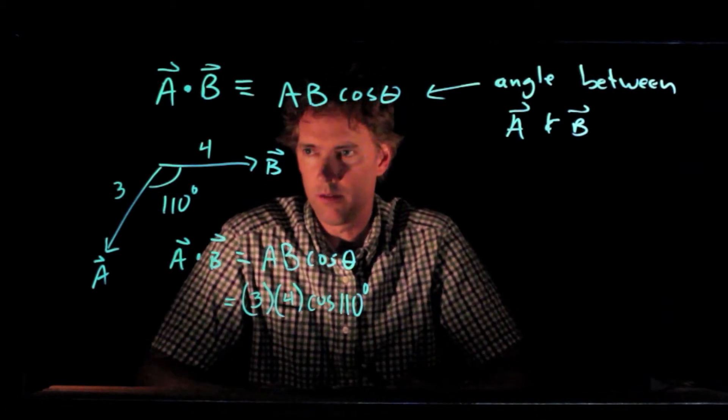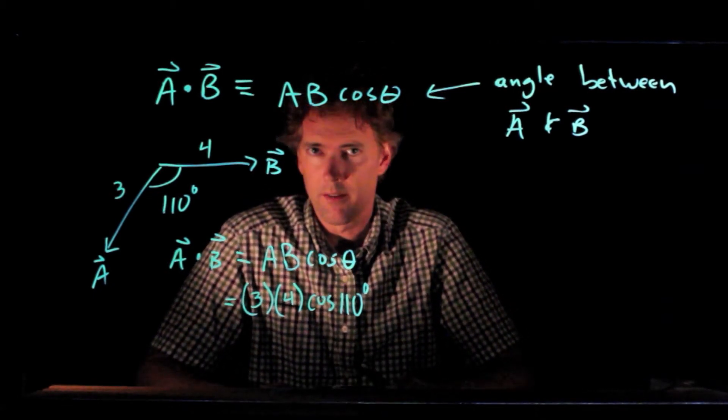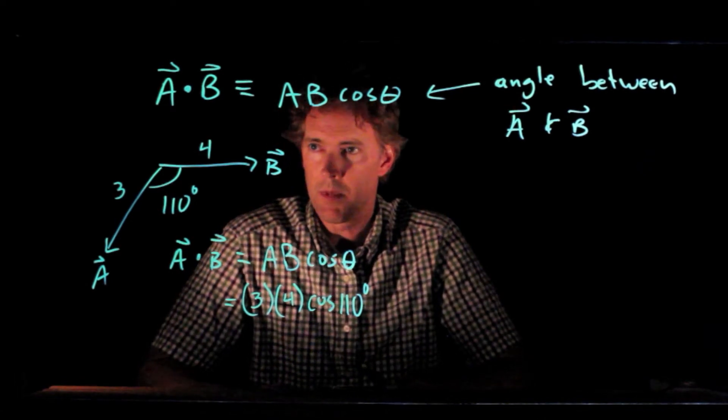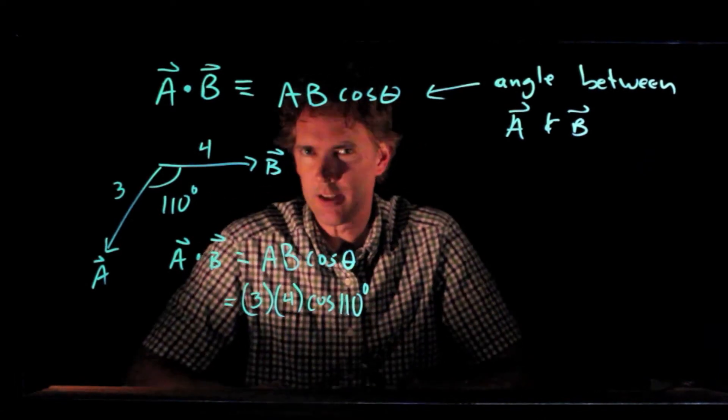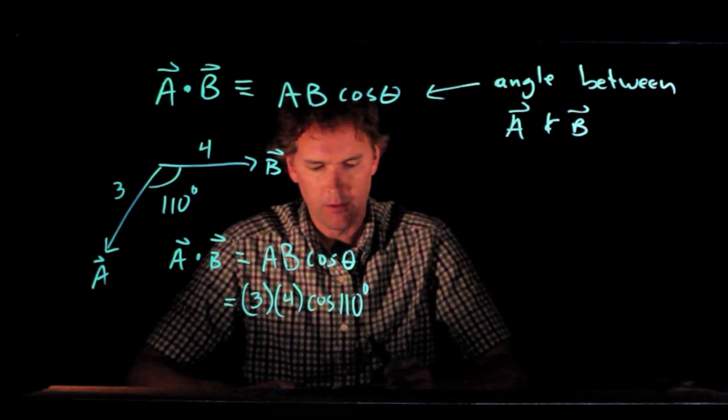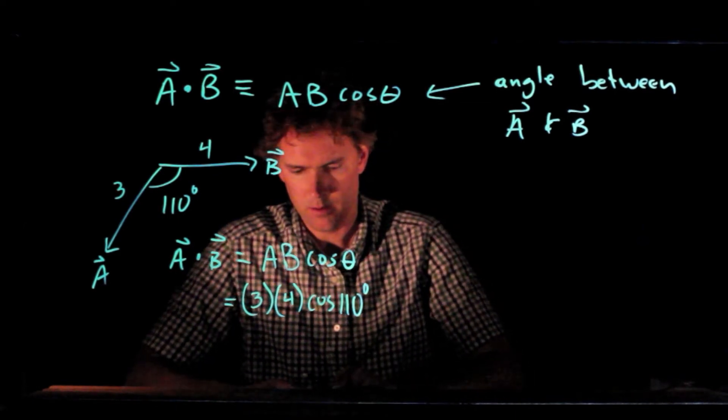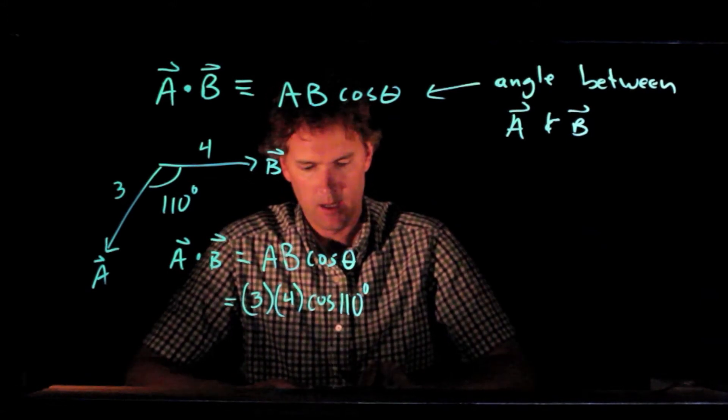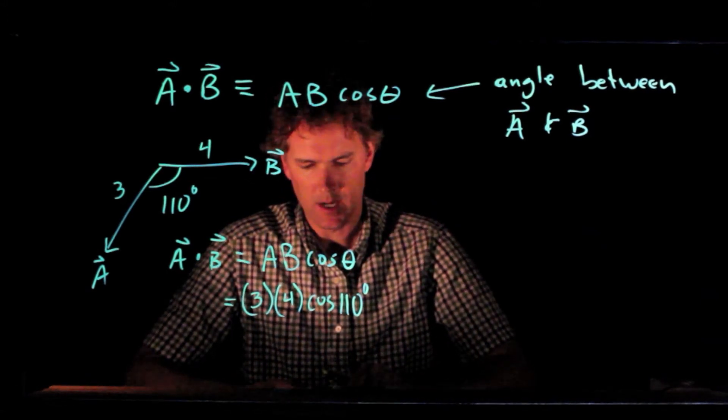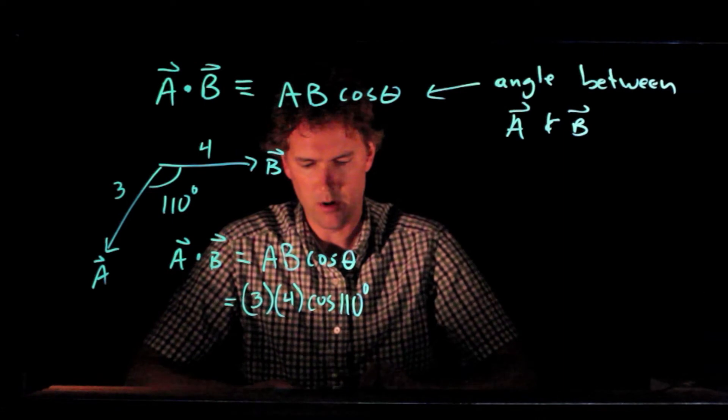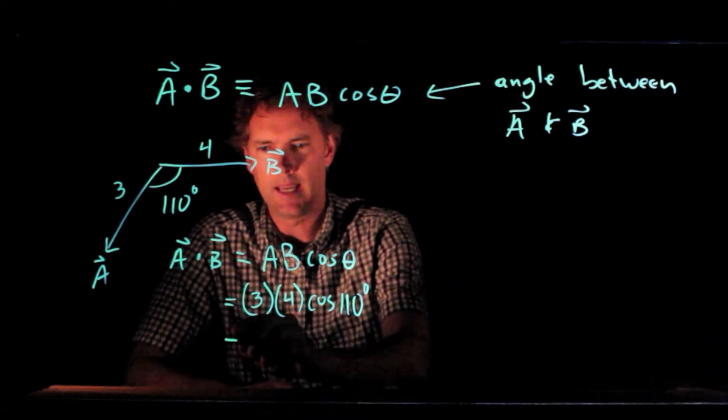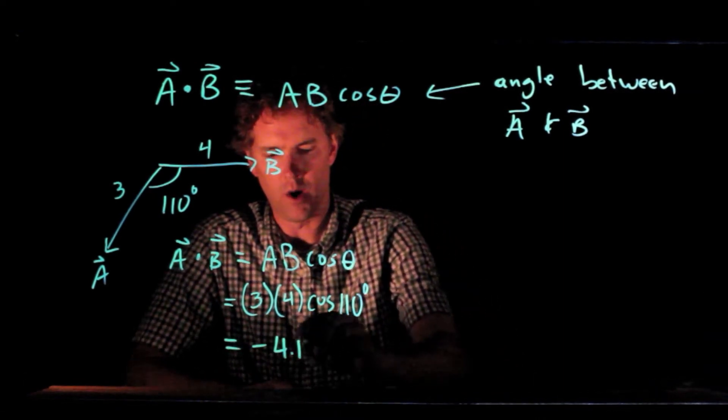Now, 110 degrees, cosine of that angle is a negative number, which makes sense. These things are kind of pointing in opposite directions. So let's calculate what we get. 110 cosine, it's indeed a negative number times 3 times 4 equals what? I get negative 4.1.